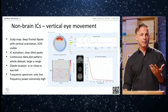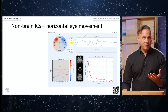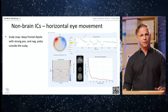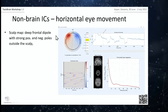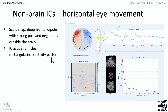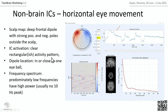For horizontal eye movement: the scalp map again shows a deep frontal dipole with strong positive and negative poles outside the scalp near the eyes. The dipole is again located in or near the eyes — though no current forward model includes the eyes, so sometimes the dipole ends up in the brain, which is confusing. We are working on a model that includes neck muscles and eyes. You see a clear rectangular pattern for saccades, and a clear steep 1/f decrease only in the low frequency range, then plateauing. ICA does a very good job decomposing eye components — identify them, remove from matrix, back-project, and get a clean dataset.